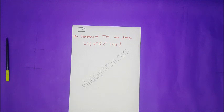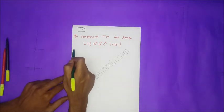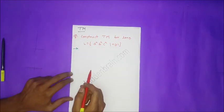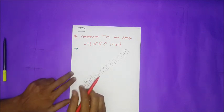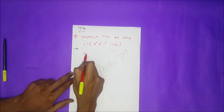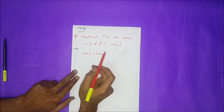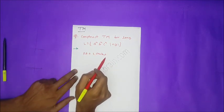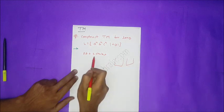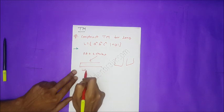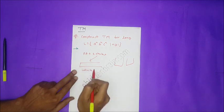We already discussed the difference between pushdown automata, Turing machine, and finite automata — please watch that video for more clarity. A Turing machine consists of finite automata plus two stacks, and these two stacks are simulated using an infinite tape.